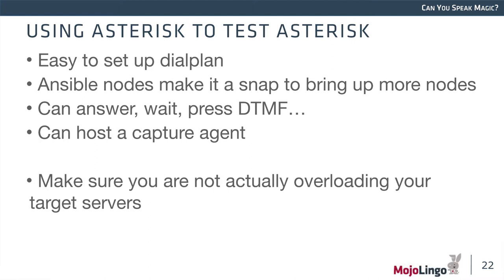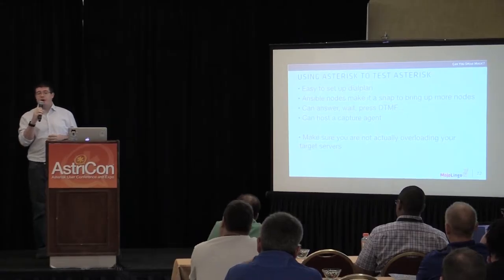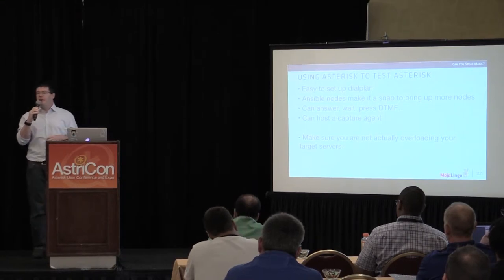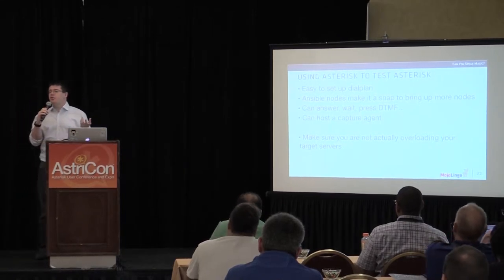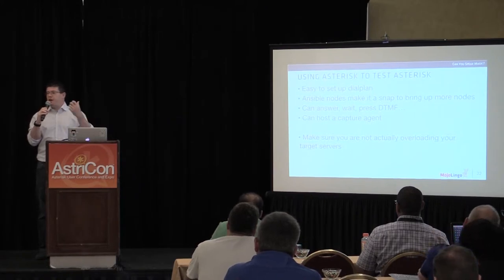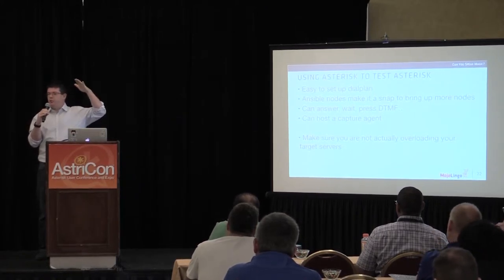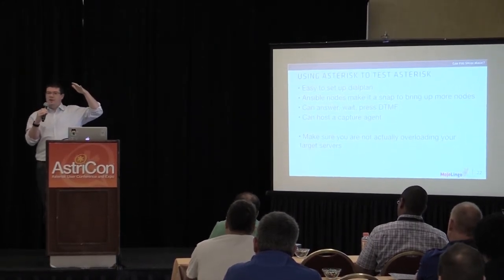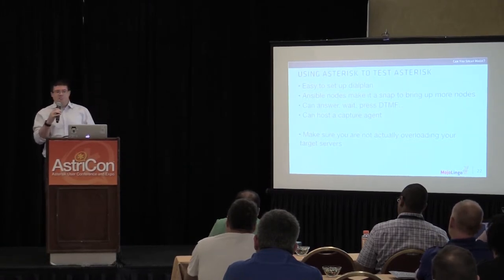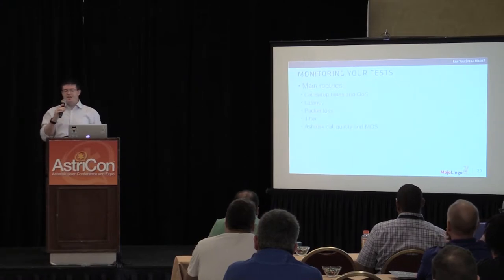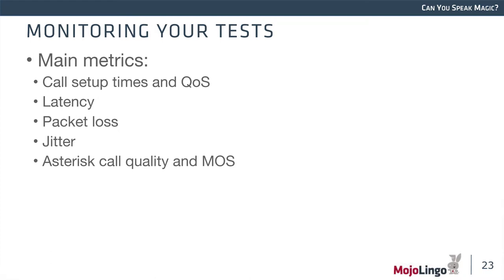Ansible makes it easy to spin up more nodes on your receiving side. Asterisk as a testing target can answer, press DTMF, play audio, do complicated stuff, and host a capture agent — giving you another point of view on service quality. Just make sure you're not overloading your target servers. We did that at the beginning: 50 Asterisk dialers hitting two Asterisk boxes that were melting. We just added more targets — it's easy to do.